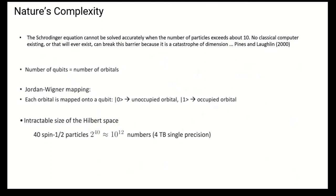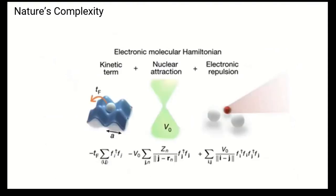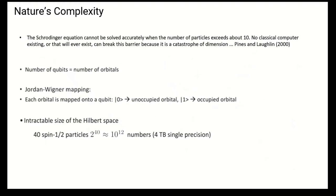This is again extension of the previous slide which says that the Schrödinger equation cannot be solved. Schrödinger equation is analogous to this equation over here which gives us the energy state or the position or the configuration of a system of atoms or molecules. The Schrödinger equation cannot be solved accurately when the number of particles exceeds about 10. No classical computing thing that will ever exist can break this barrier because it is a catastrophe of dimensions. Like I said earlier there are so many observables, so many energy functions and so many interactions to be considered. This quote was said by Pines and Laughlin in 2000.